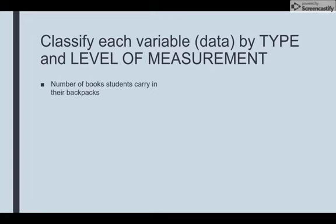The number of books students carry in their backpacks – would it be qualitative or quantitative? Initially the words 'number of' jump out at me, which would imply it's quantitative. If it's quantitative, I need to think about is it discrete or continuous. Since I'm counting the number of books, it would be discrete – so it is quantitative discrete.